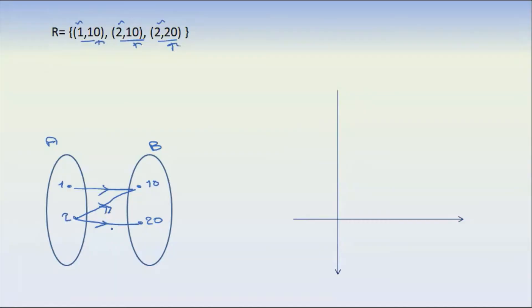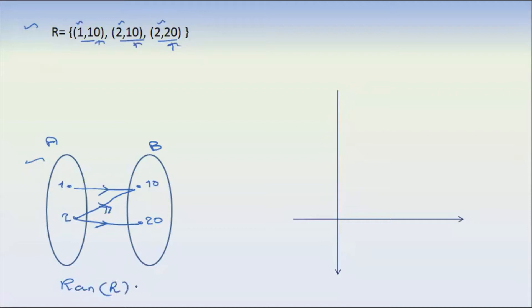That's how we do this diagram. This diagram has a range of 20. That's the range of 20. R is equal to the set of {10, 20}.